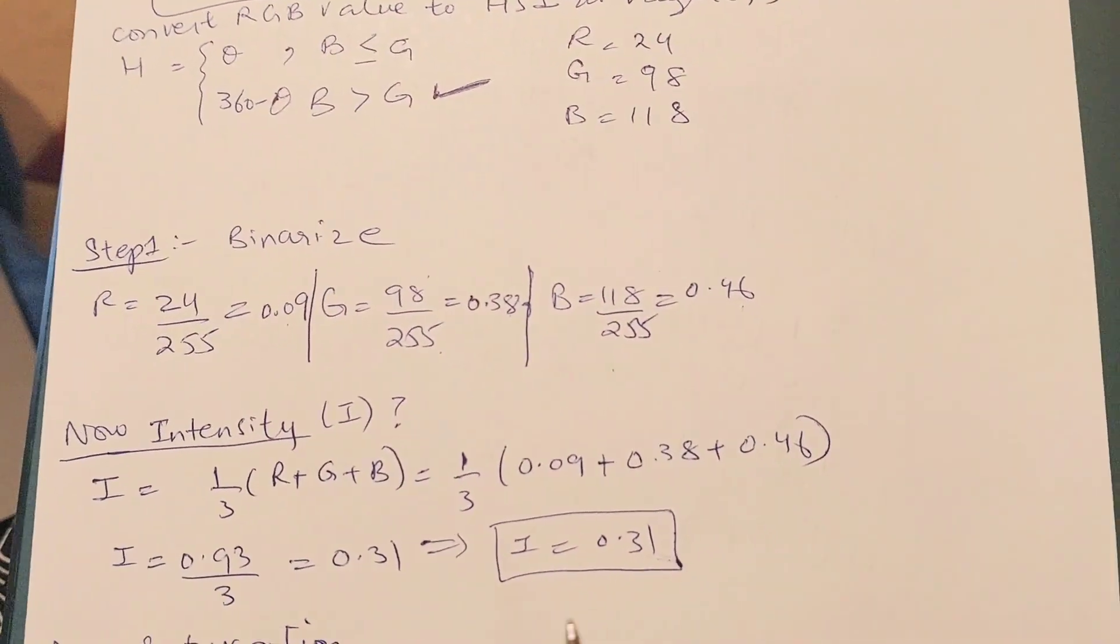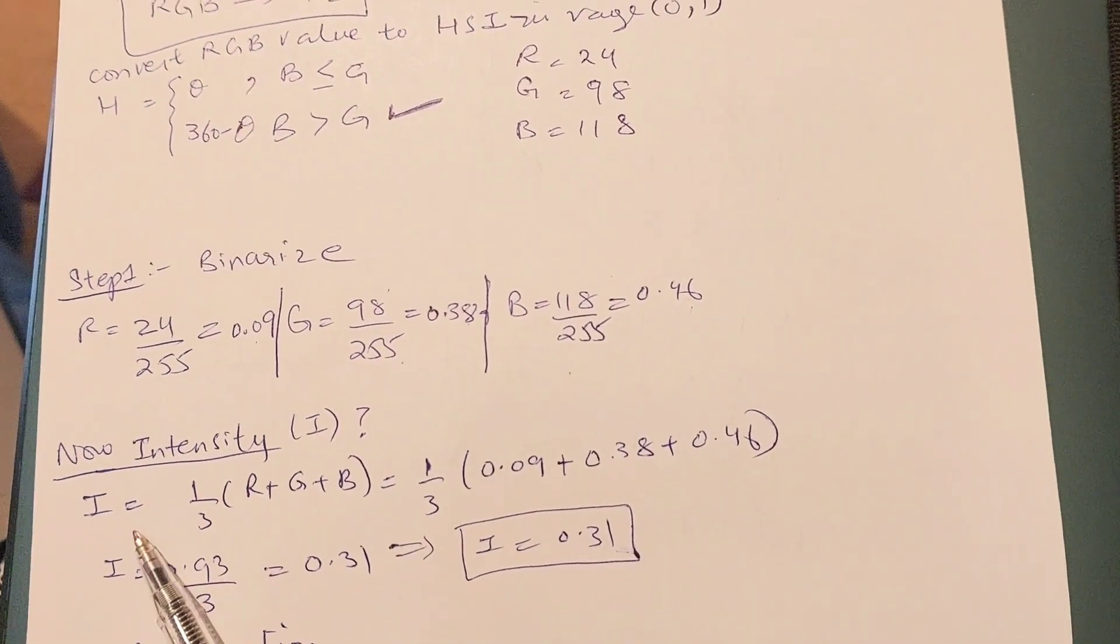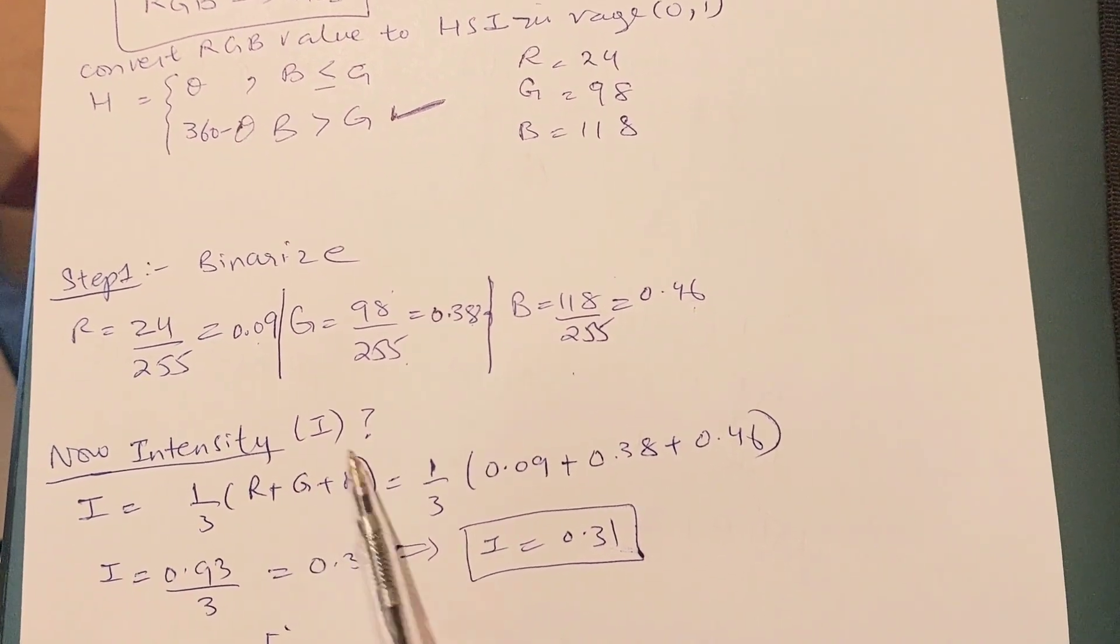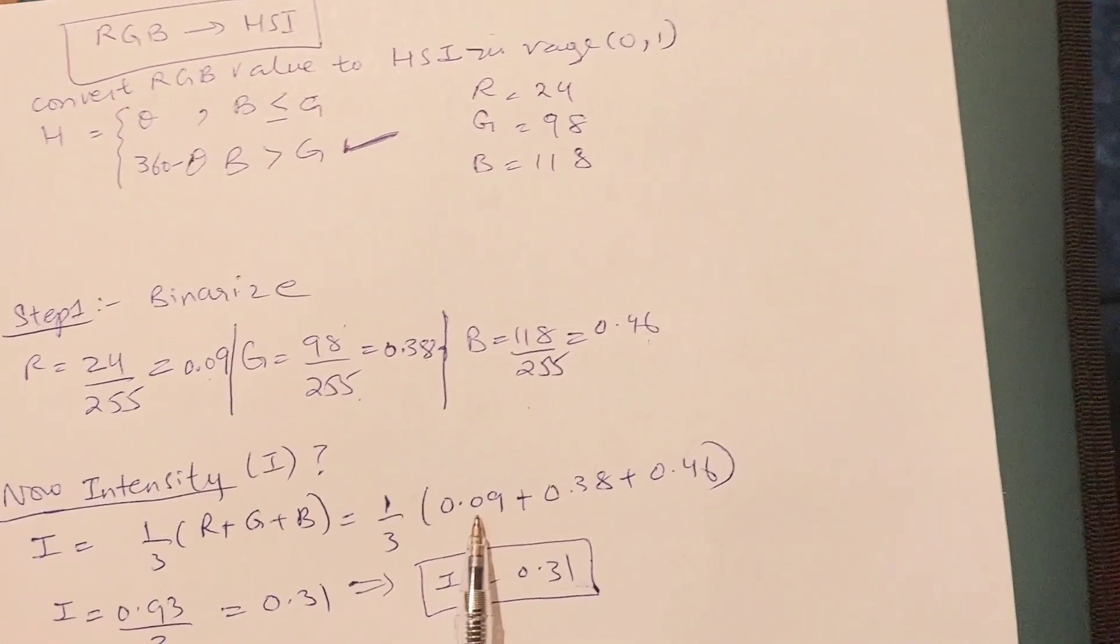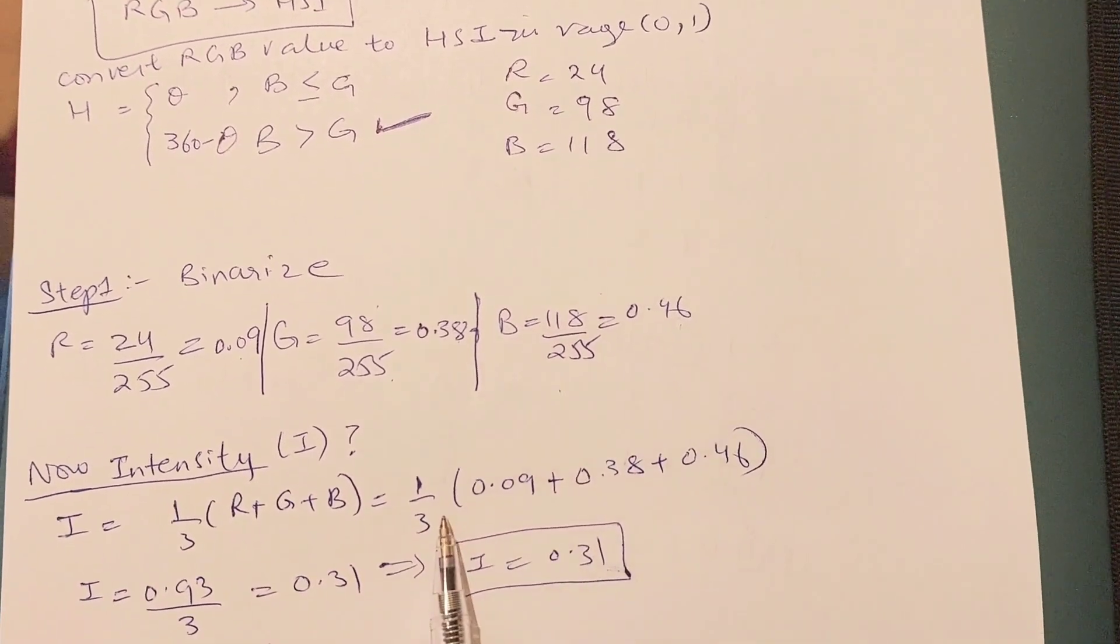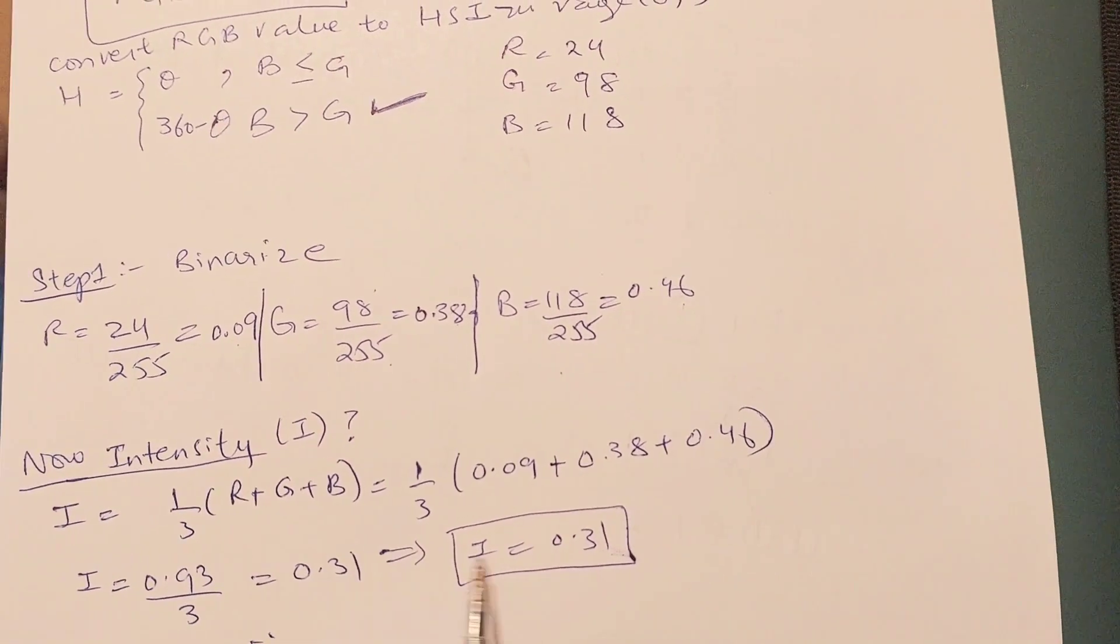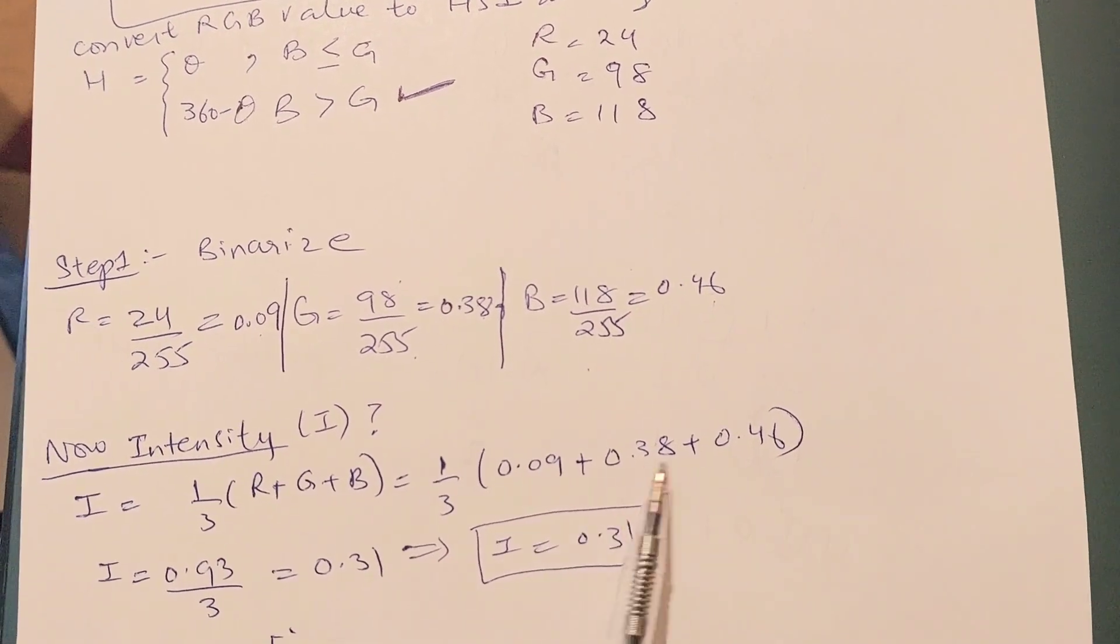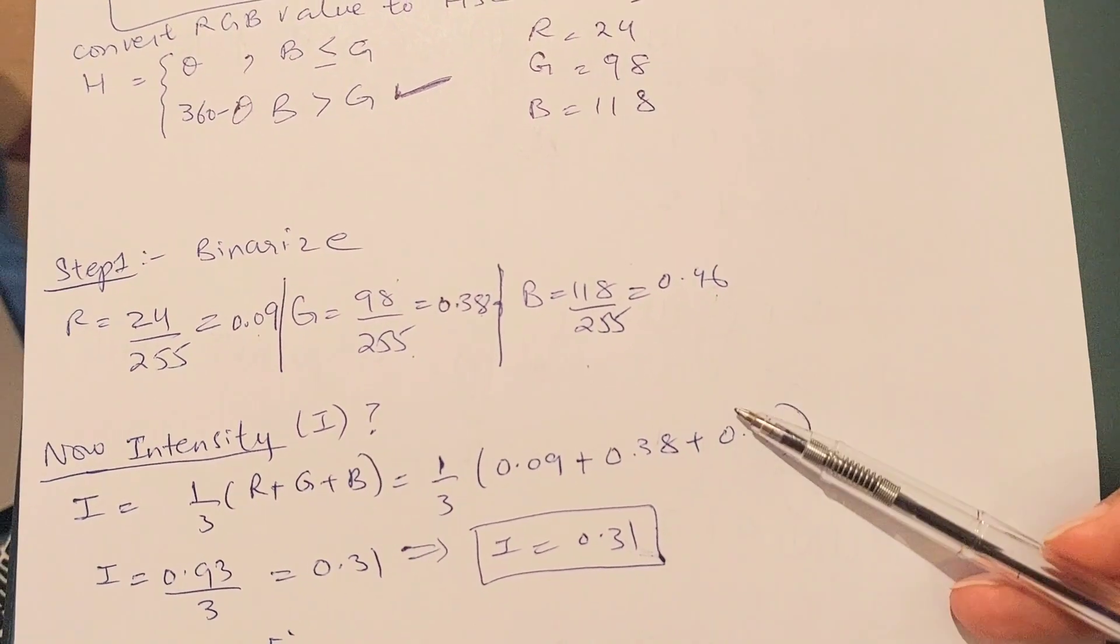Now we're done with our first step. We're going to calculate intensity because intensity has the easiest formula. Intensity equals 1 divided by 3, with R, G, and B all summed up. I'm going to put the values of 0.09, 0.38, and 0.46, sum them up, and divide by 3. It comes out to be 0.93 divided by 3, and the intensity value is 0.31.